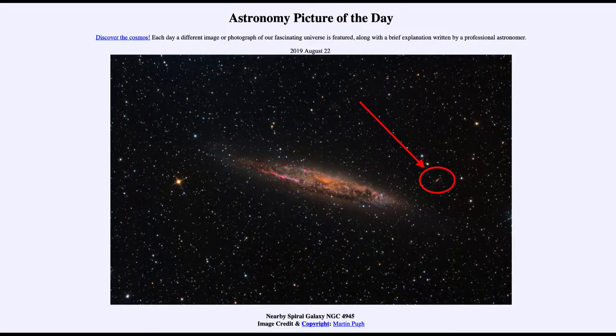Greetings and welcome to the introduction to astronomy. One of the things that I like to do in each of my introductory astronomy classes is to begin the class with the astronomy picture of the day from the NASA website, apod.nasa.gov/apod. And today's picture for August the 22nd of 2019 is titled nearby spiral galaxy NGC 4945.